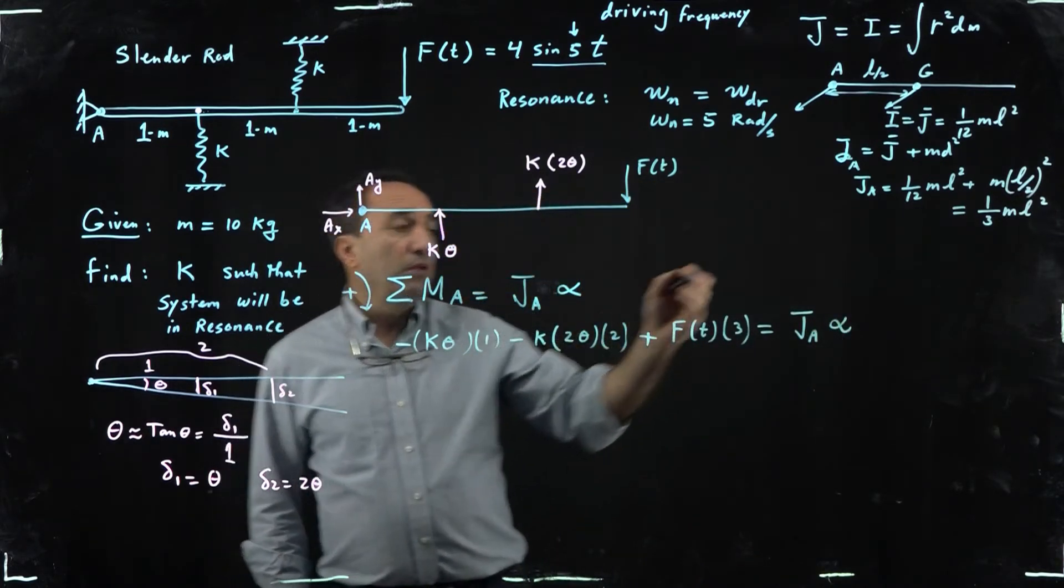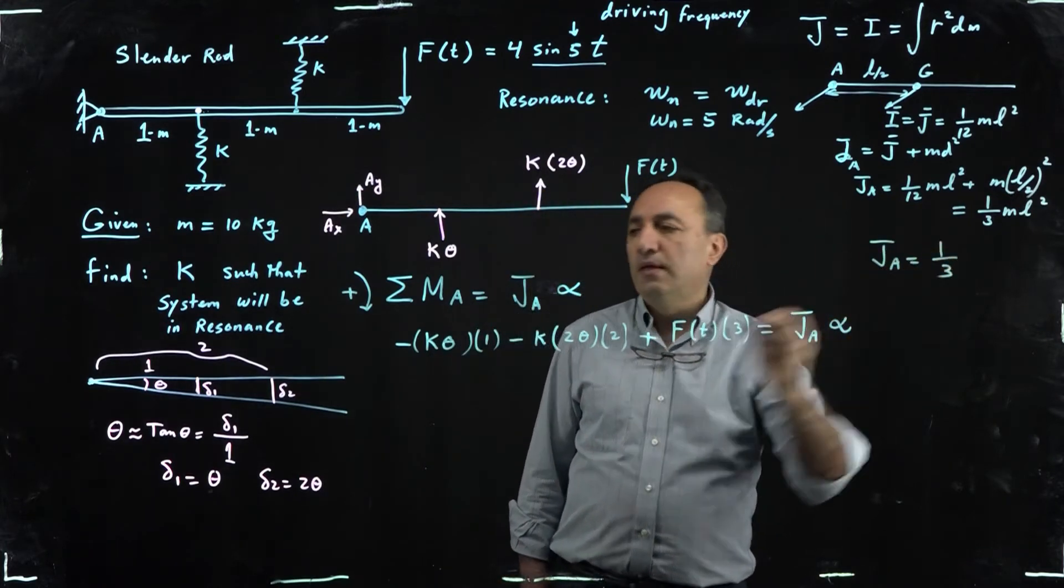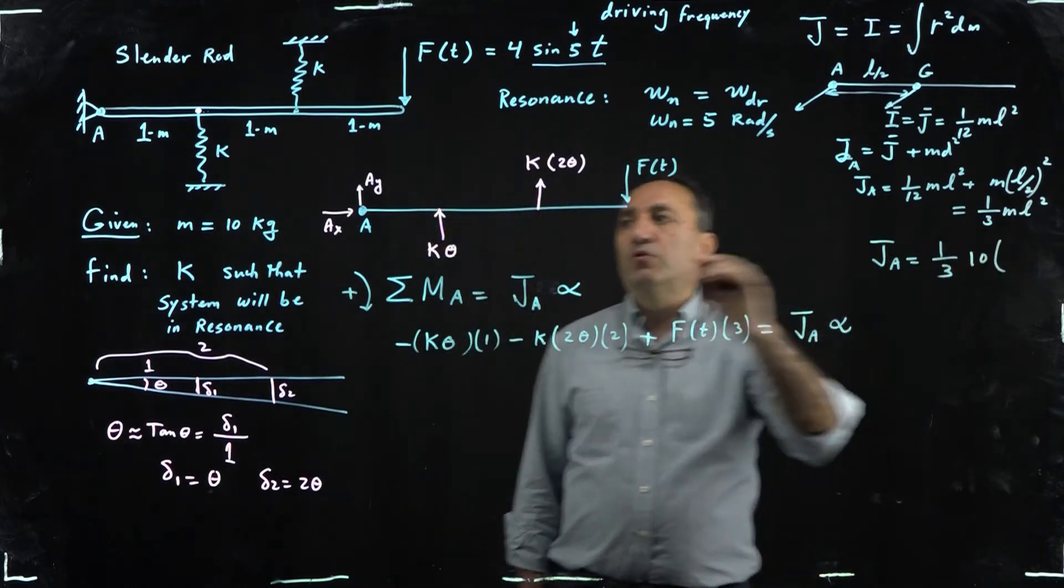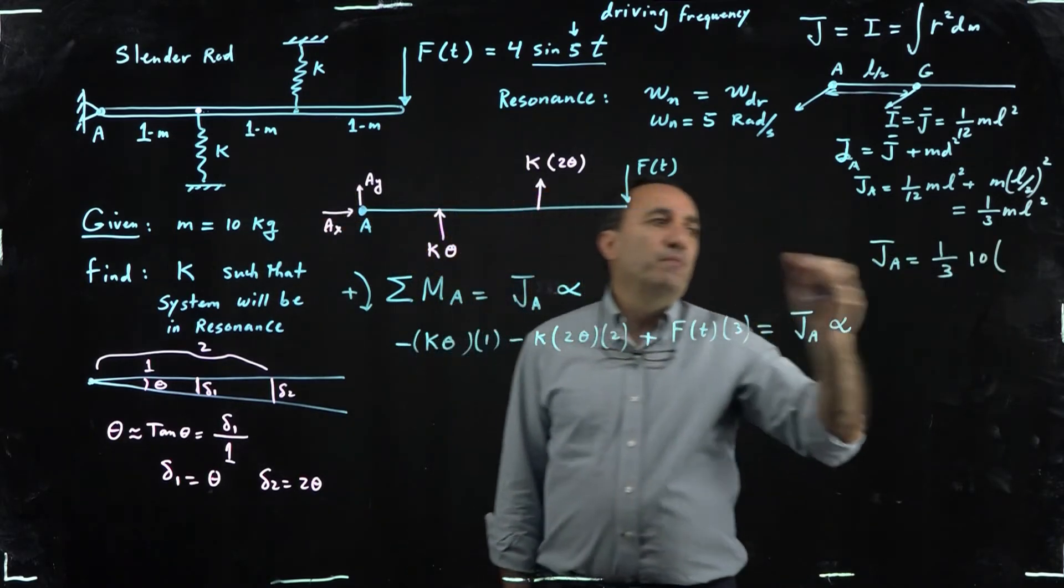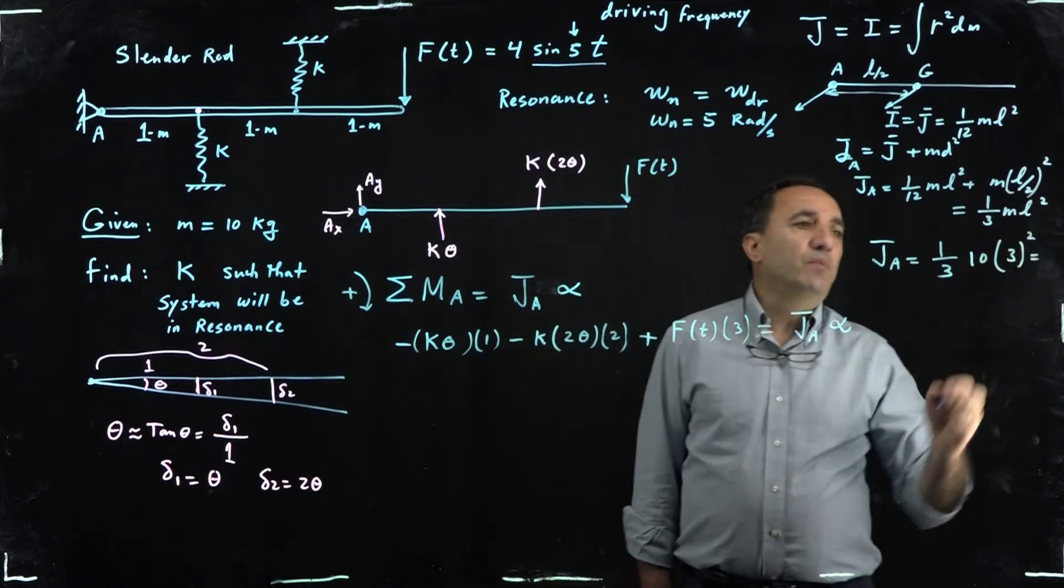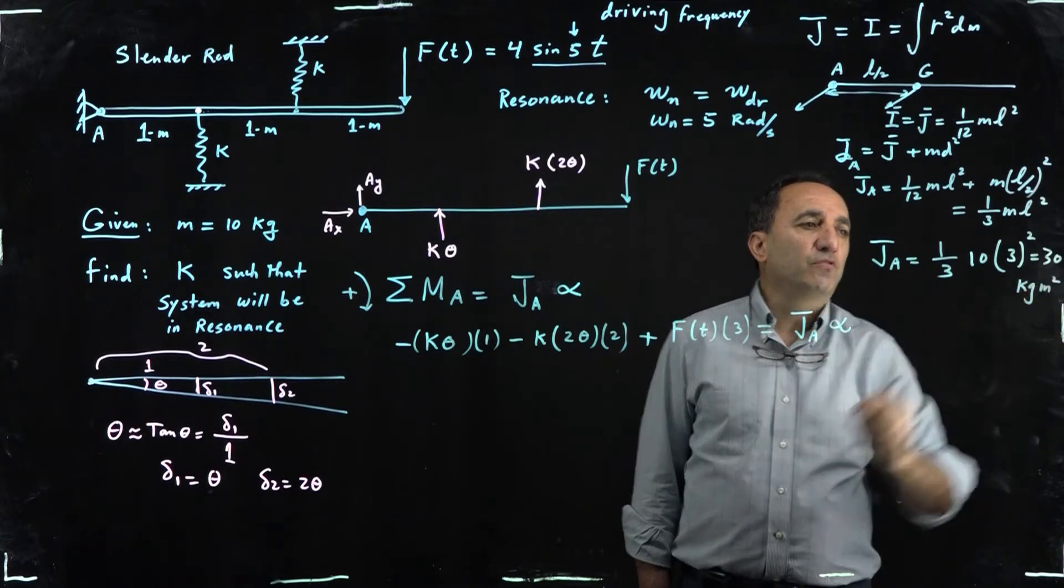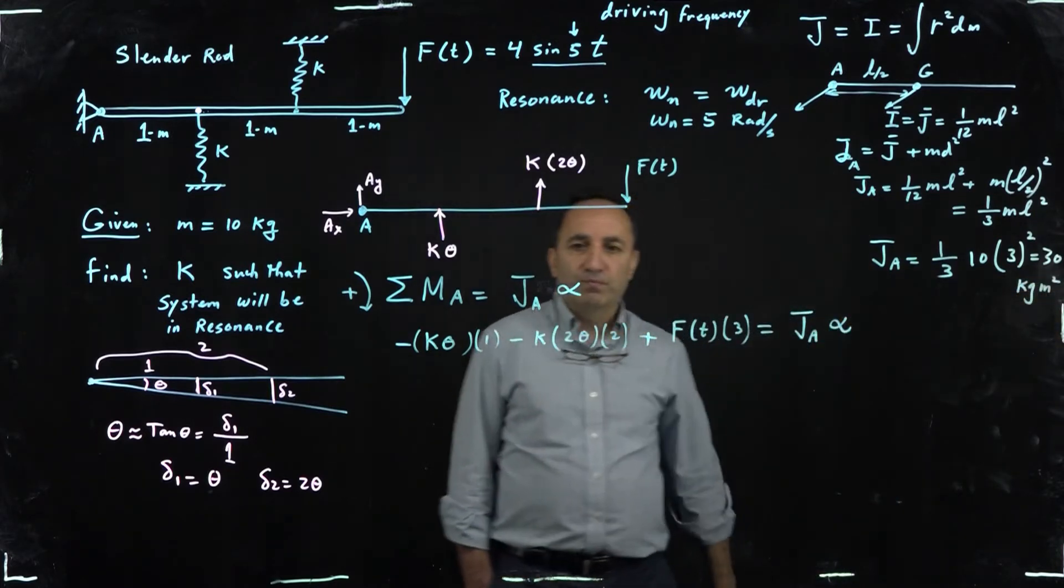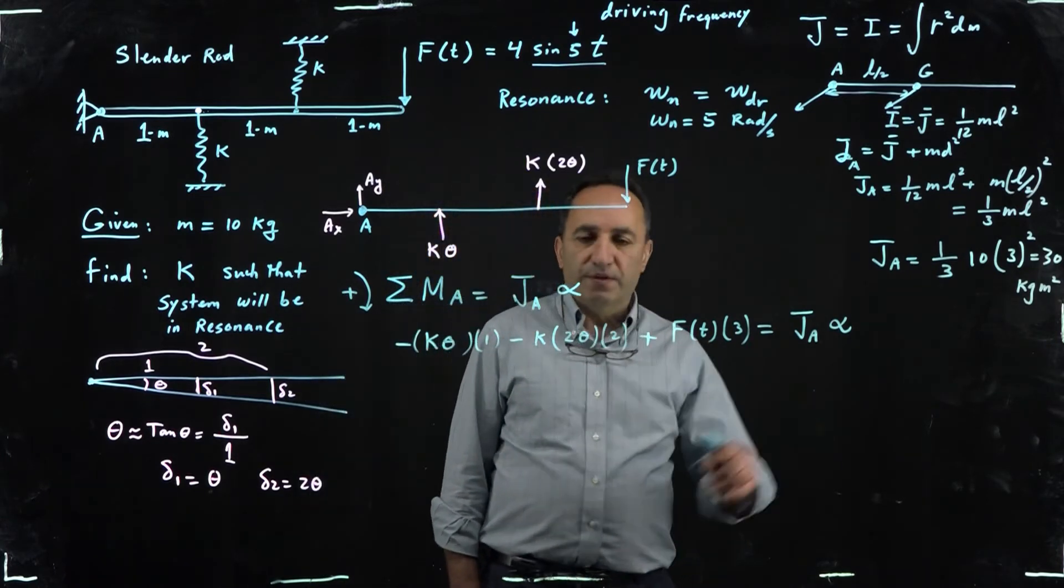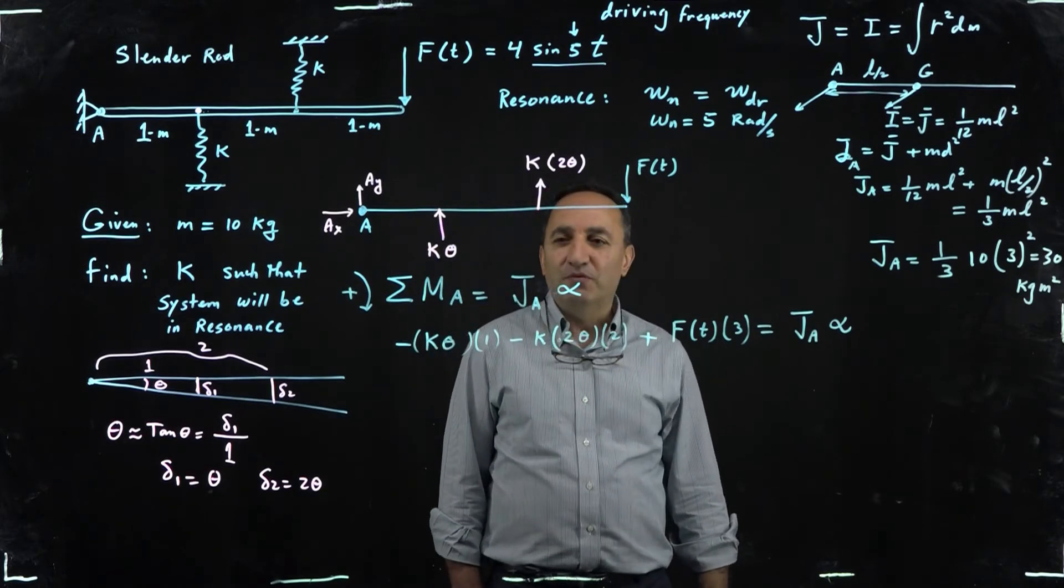In a minute I'm going to actually calculate J sub A for you. Let me just take care of this first. By the way, let's get back here and say, well what is J sub A? One third ml squared. Mass is given to you, 10, and the length of the bar, notice, is three meters, right? So that becomes what, that becomes 30. Unit is what? Kilogram meter squared. That was leaving the margin of my board here, so that's why I moved the unit down there for you.